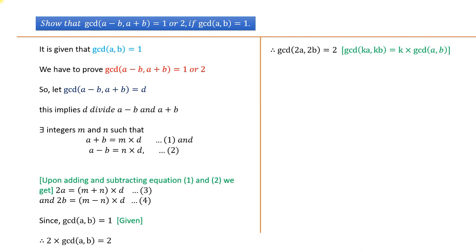Because we know the formula: GCD(ka, kb) = k × GCD(a, b).